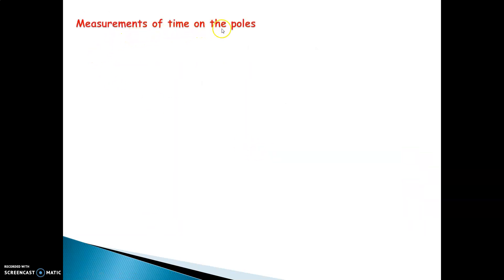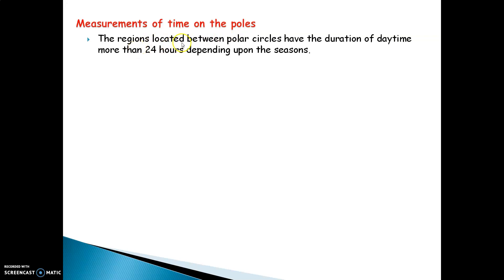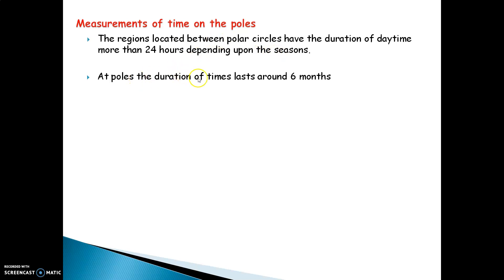Measurements of time at the poles: the region located between polar circles has a duration of daytime more than 24 hours depending upon the seasons. At the poles, the duration of time lasts around six months. Always note that the equator receives direct sunlight as compared to the polar regions.